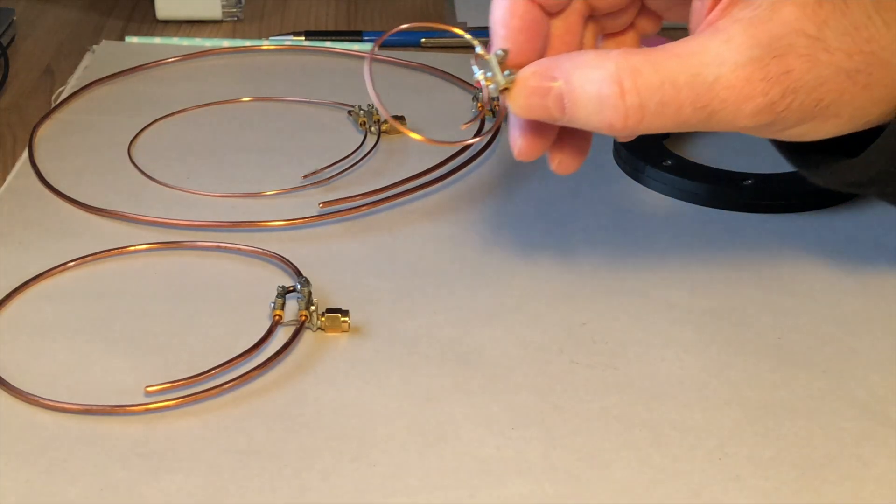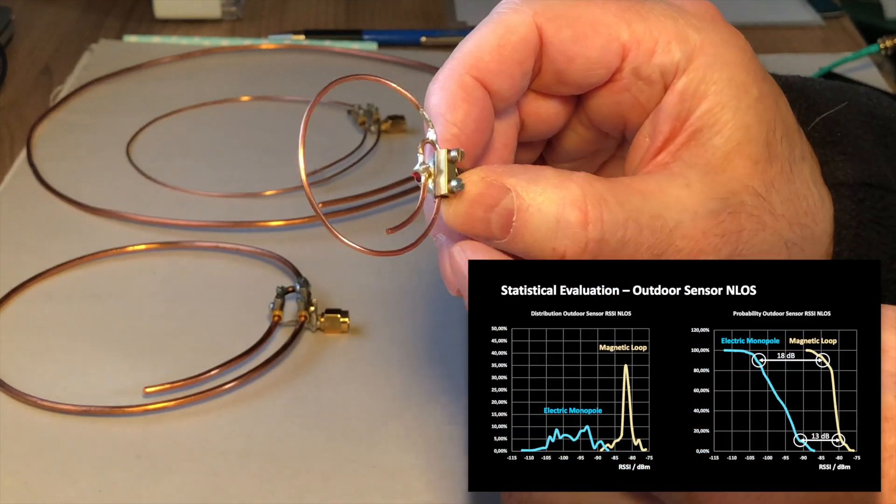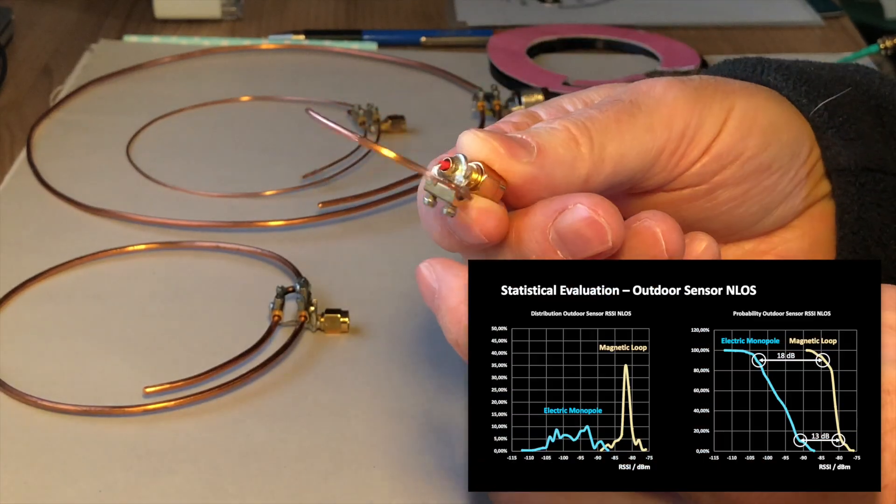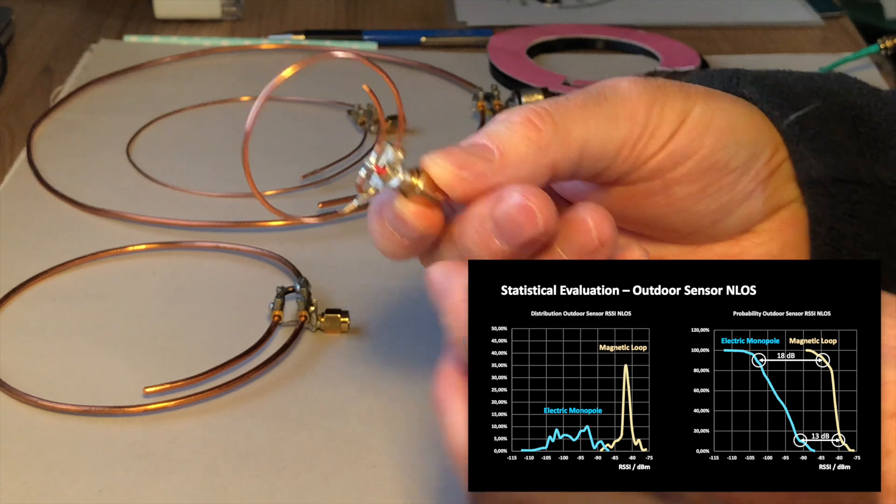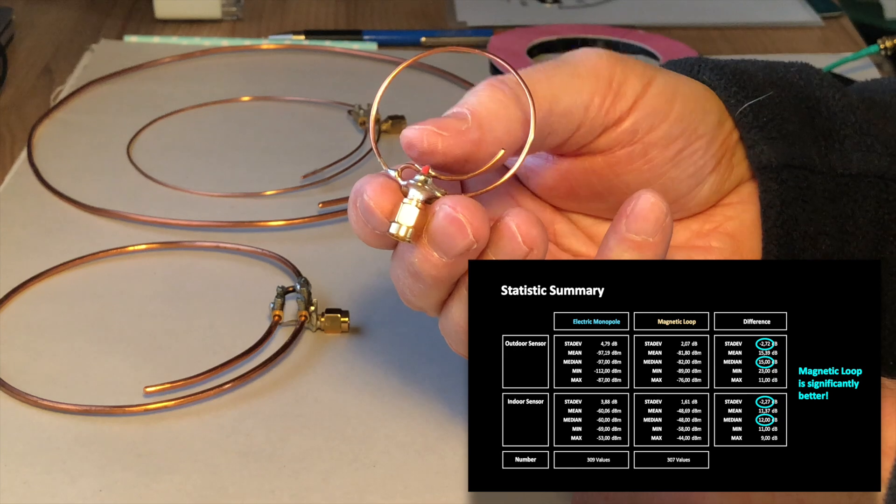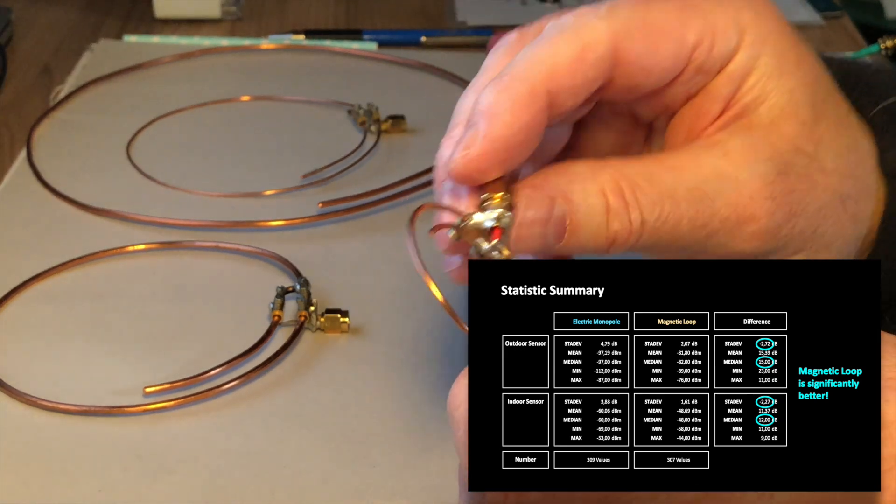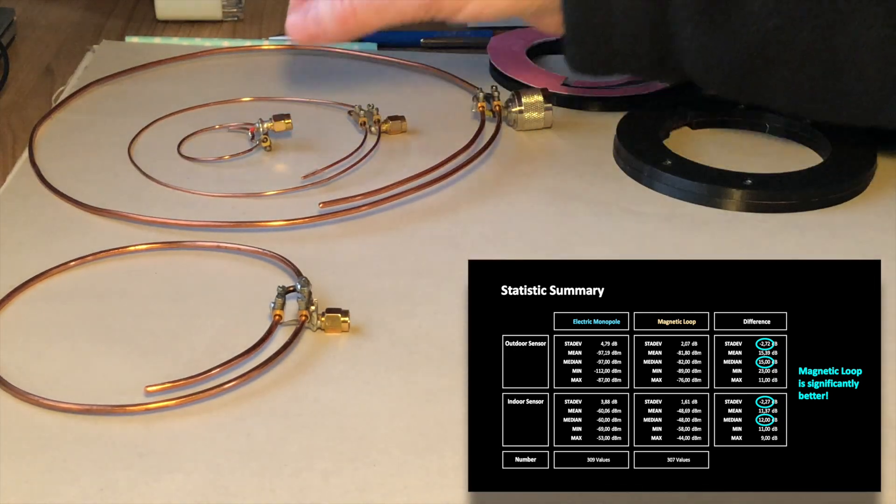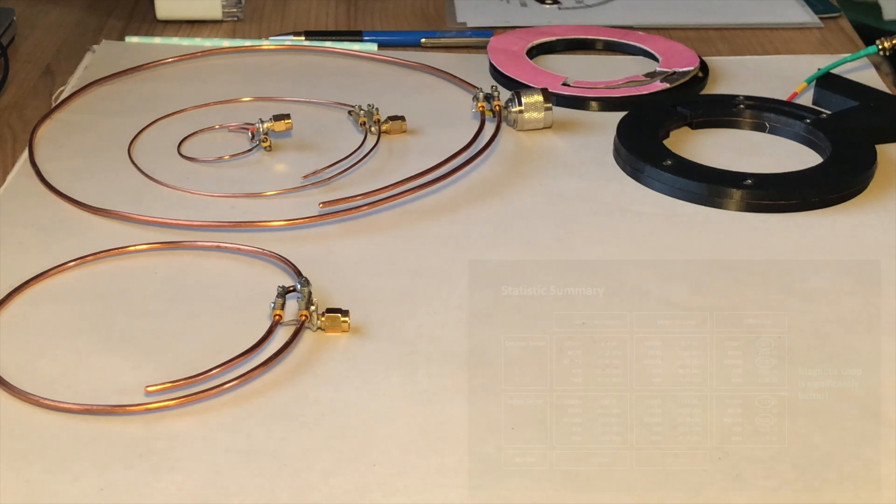We built and tested a number of these antennas for LoRa at 866 MHz, for WiFi and for the 70cm amateur radio band. One of our followers is even using this antenna for 1.4 GHz radio astronomy.